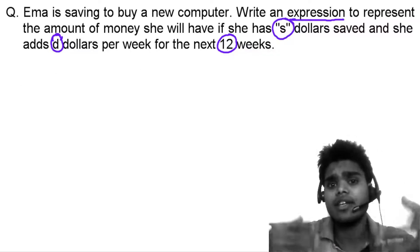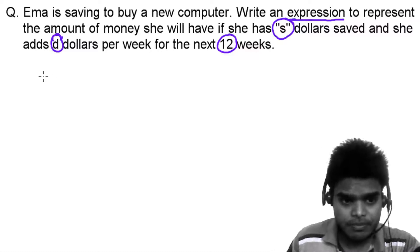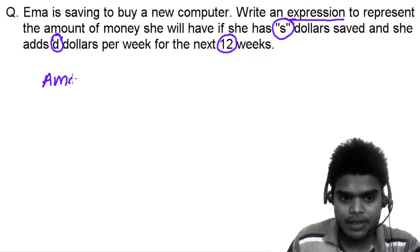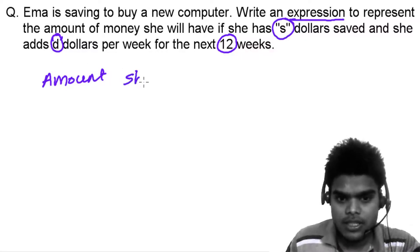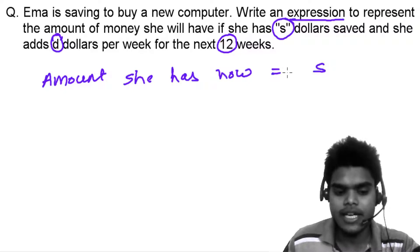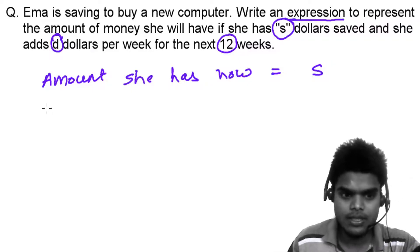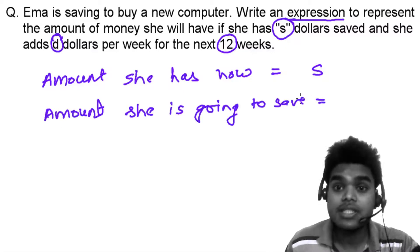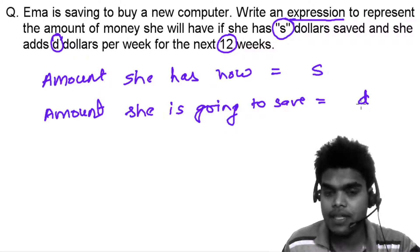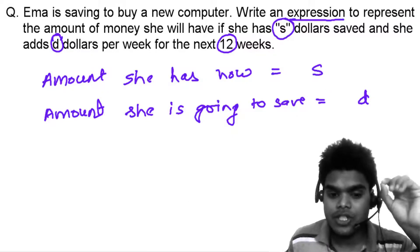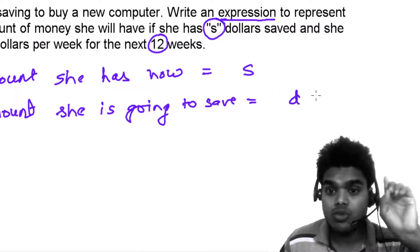So let's first write the information we have. The amount she has now is S dollars. And the amount she is going to save for the next 12 weeks — every week she saves D dollars, and she is going to save that for 12 weeks.